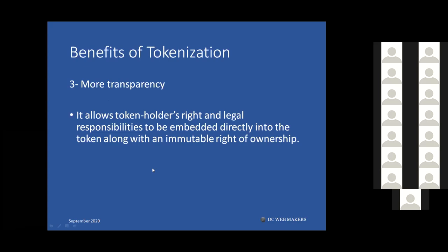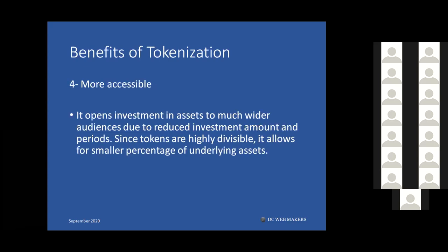Another benefit is more transparency. As you know, blockchain transactions are immutable — once recorded, no one can tamper with it. That gives you more transparency, including information about previous owners. More accessibility is also a benefit. For example, HSBC is one bank working on tokenization — I'll talk about that shortly. They are essentially tokenizing their debt.